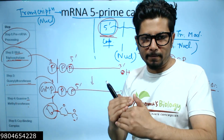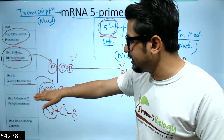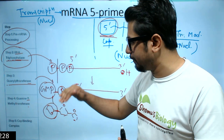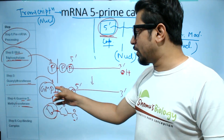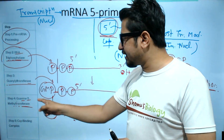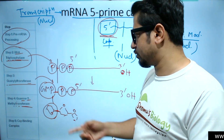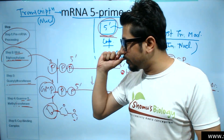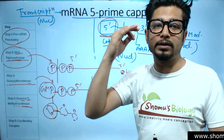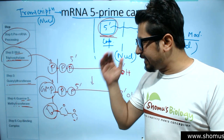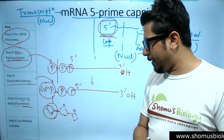The third enzymatic step is modification of the guanosine that was just attached. The enzyme is guanine-7-methyltransferase, which modifies the guanosine residue at the seventh carbon position by attaching a methyl group. This step is catalyzed by guanine-7-methyltransferase, completing all three enzymatic steps of 5' capping.